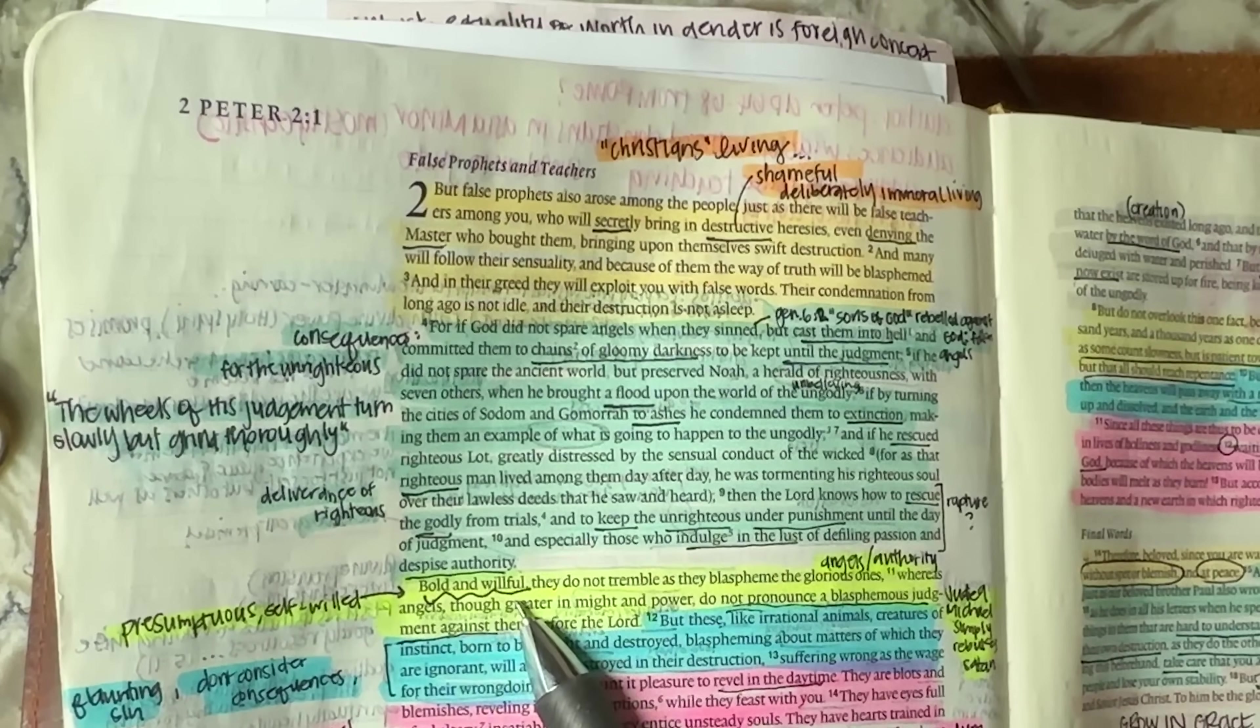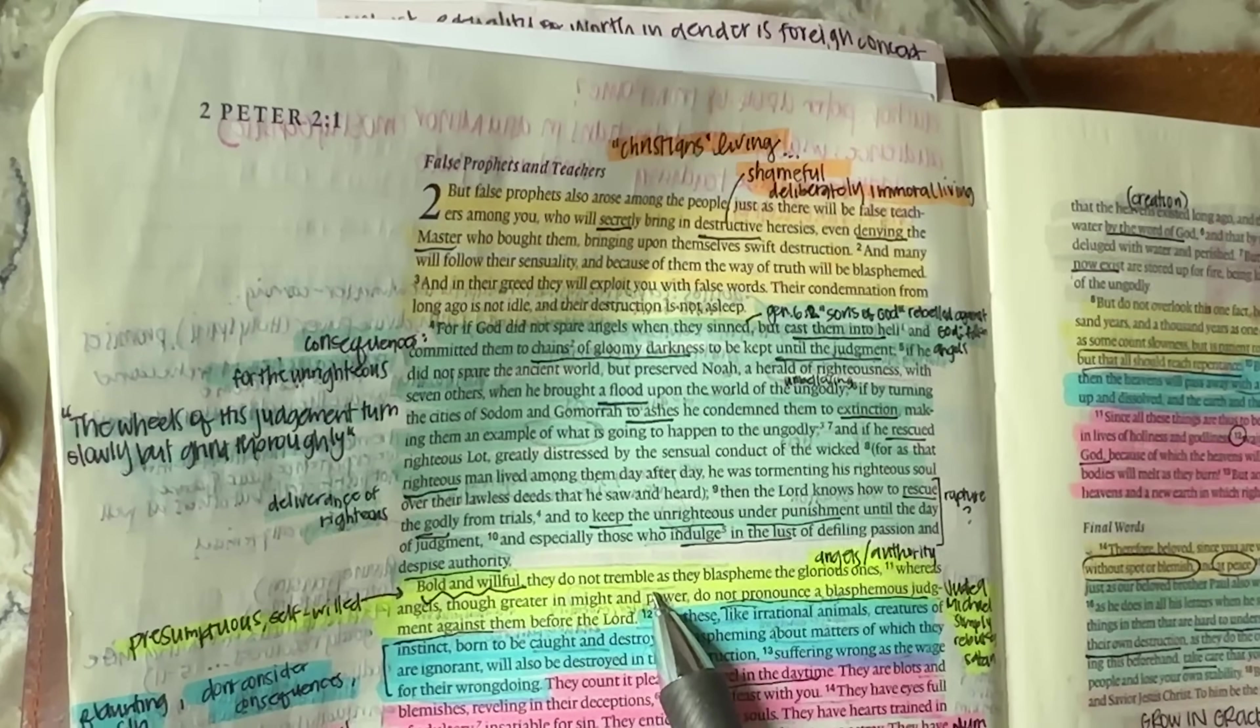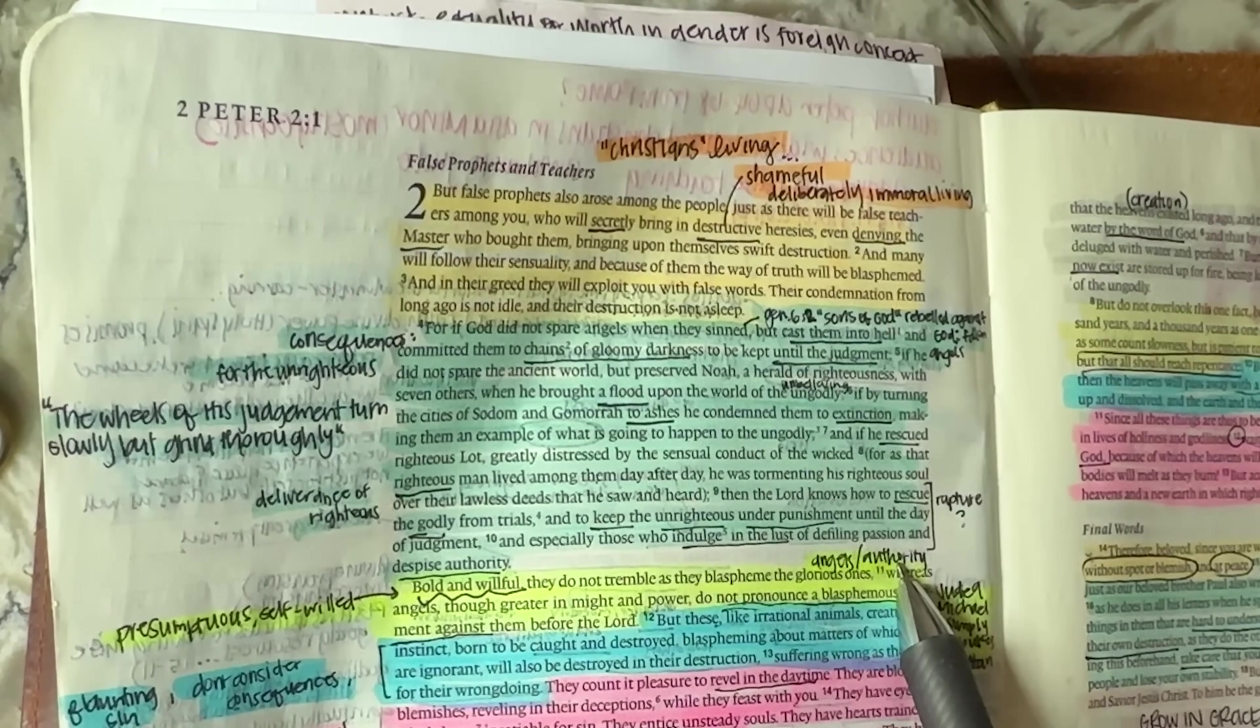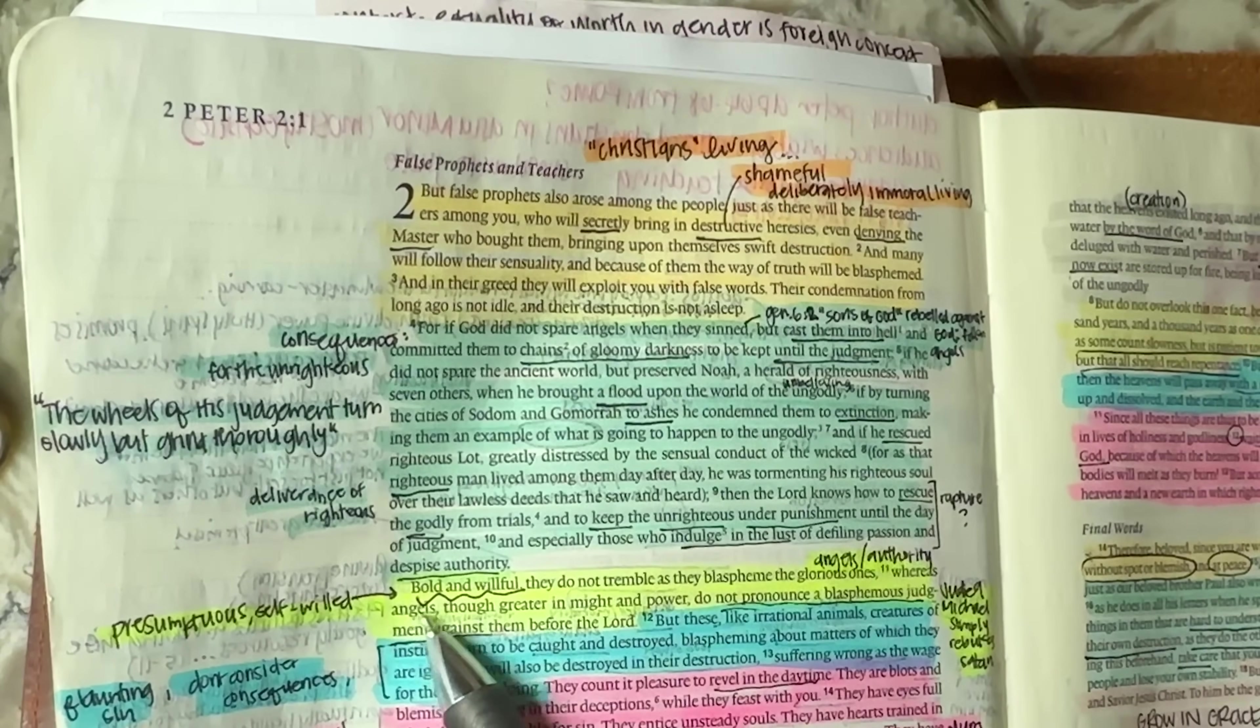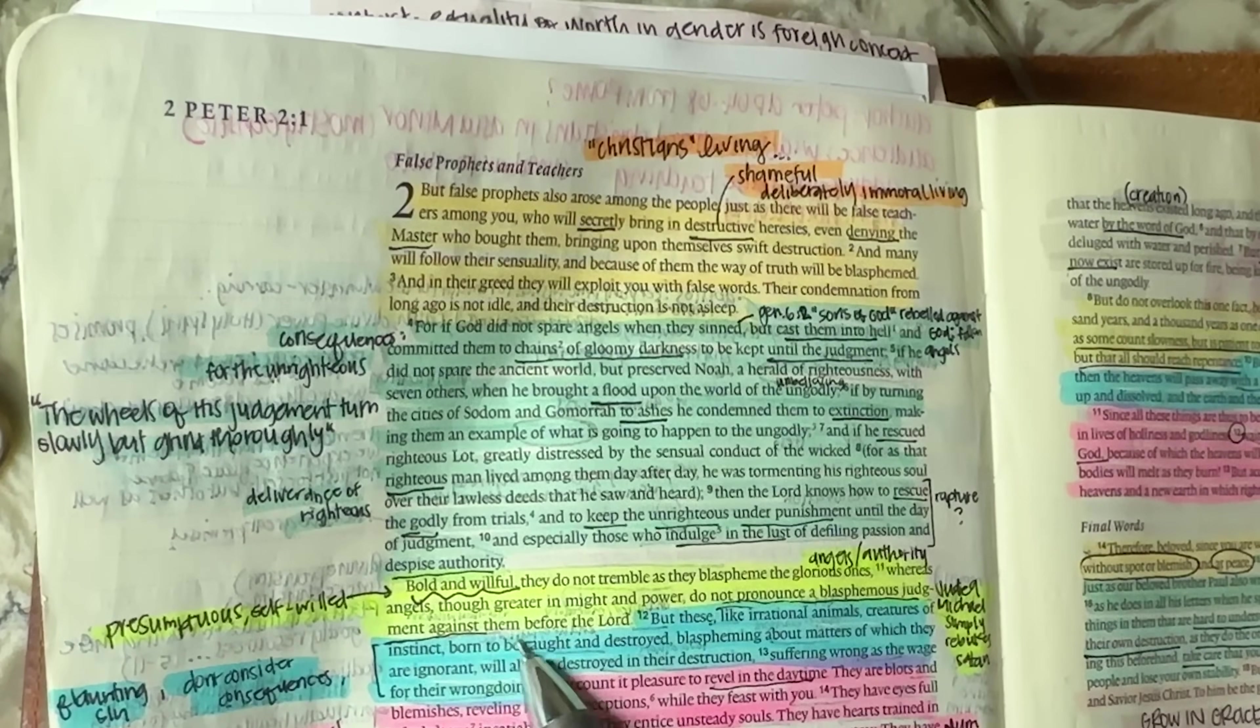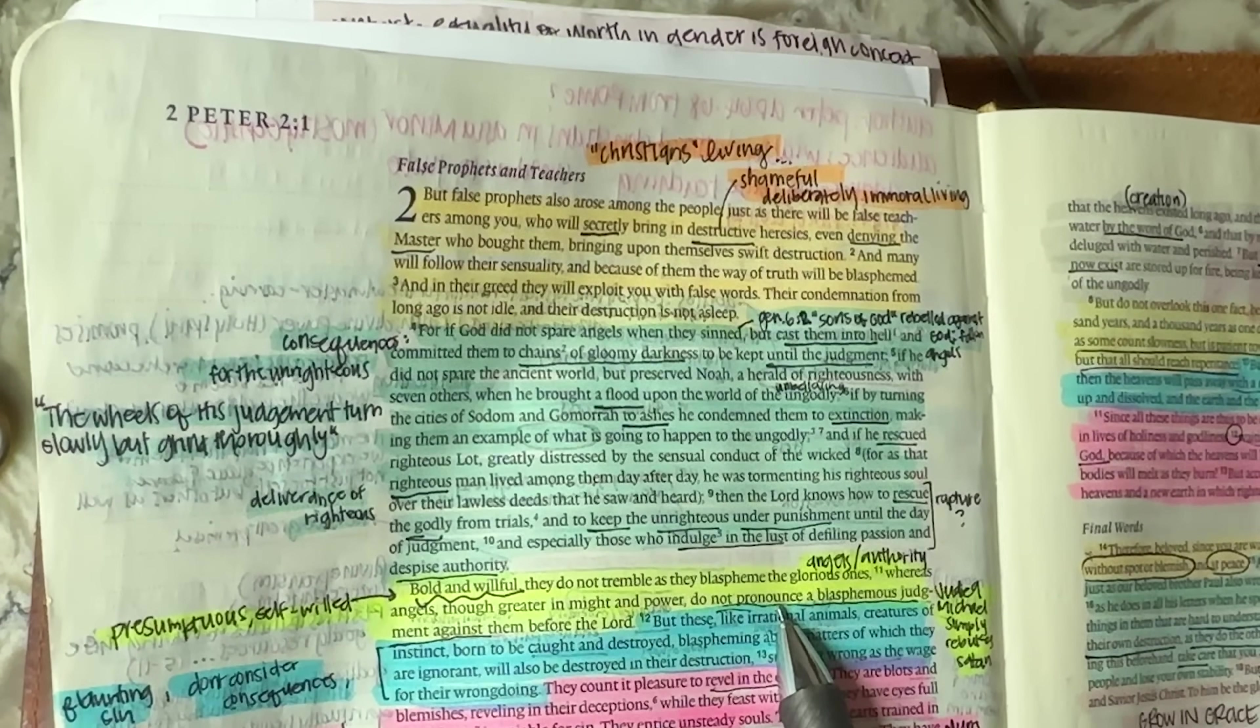So bold and willful, or in other words, presumptuous and self-willed, they do not even tremble as they blaspheme the glorious ones, meaning either those in authority over them or even the angels. Whereas angels, though greater in might and power, they don't even pronounce a blasphemous judgment against them before the Lord. So the angels, the good angels don't even speak against them.